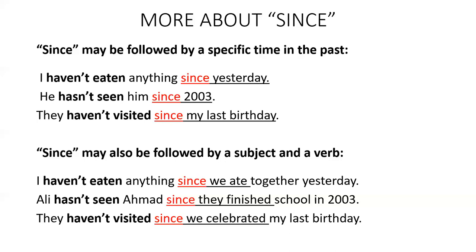To summarize: 'since' can be followed by a specific time in the past or by a sentence with a subject and a verb. In both cases, the main verb in the independent clause must be in the present perfect.